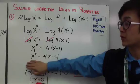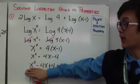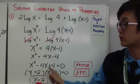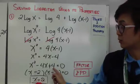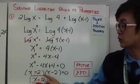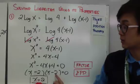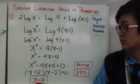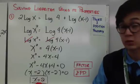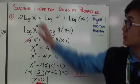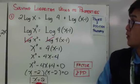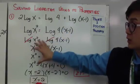Distributing 4 to x minus 1 gives x squared equals 4x minus 4. Equating to zero gives x squared minus 4x plus 4 equal to 0. This is factorable as x minus 2 times x minus 2. Using the zero product property, both values of x equal positive 2. That is how we use the properties of logarithms to simplify and solve for x.